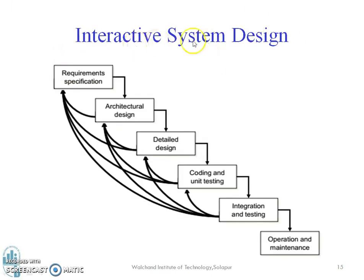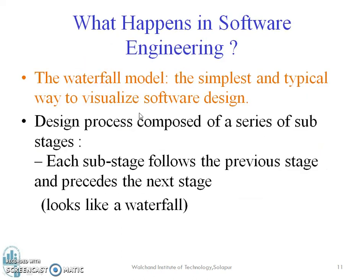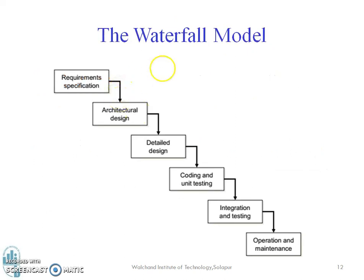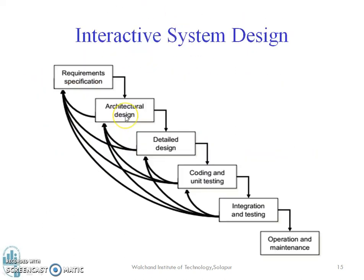This is the diagram of an interactive system design. The requirement specification stage goes to the architectural stage, but it can also loop back, as shown by the arrows. Whereas in the waterfall model, you cannot go back. That is the basic difference.